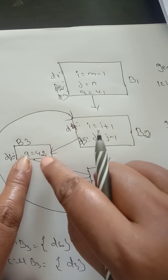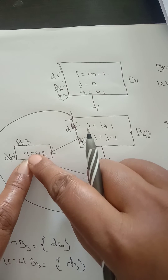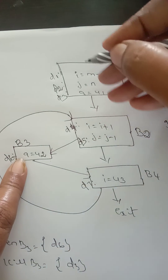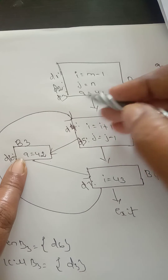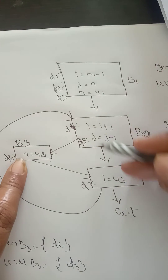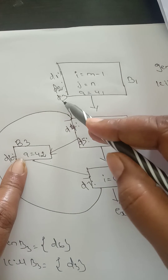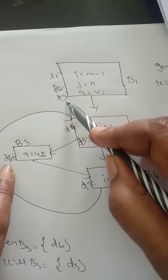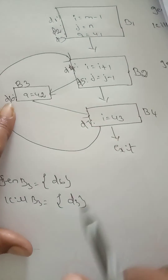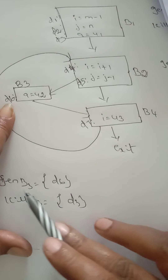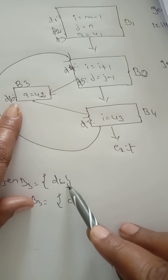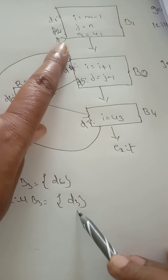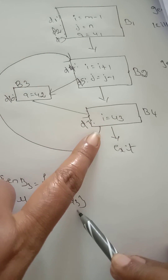For block three, statement D6 is a equal to u2. We check where variable a is defined — in block one we have a equal to u1, which is D3. So while generating D6 we have to kill D3. Generation of B3 equals {D6}, kill of B3 equals {D3}.